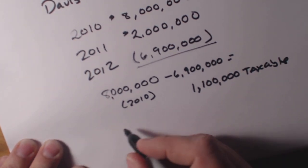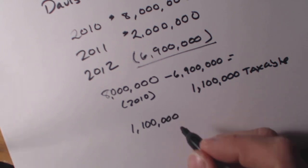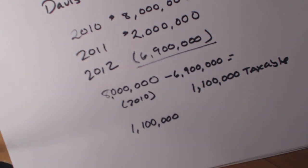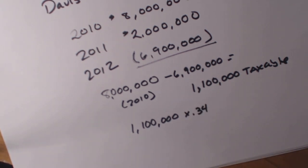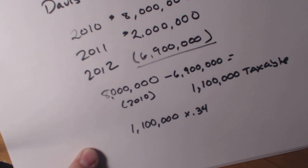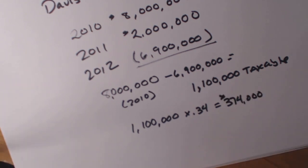Then we're going to take our $1.1 million in taxable income, and if we go back to our charts for the federal taxes, we're going to see that this is at 34%. So we're going to multiply $1,100,000 by 0.34, and we are going to pay $374,000 in taxes.